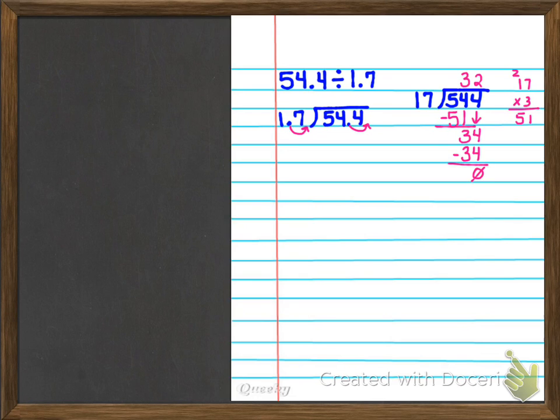17 goes into 34 two times. Two times 17 is 34. And I have nothing left over, so my problem is officially done. Your final answer for this problem is 32.